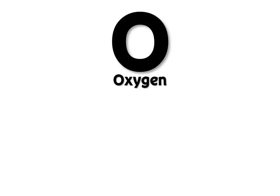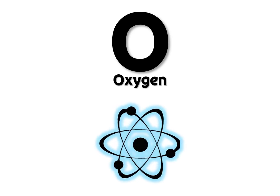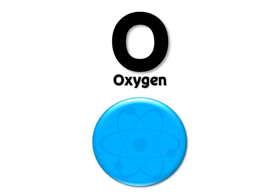Let's start off with the element represented by the letter O. O is the chemical symbol for oxygen. Oxygen is just an atom that we can represent with a circle.